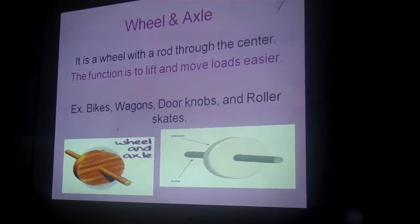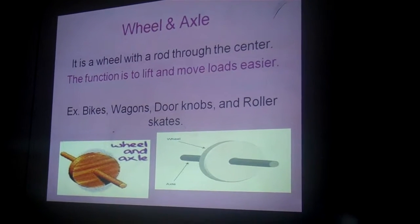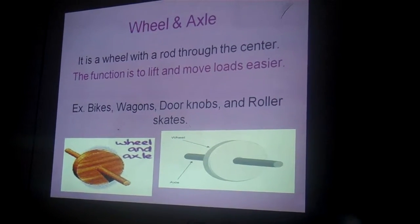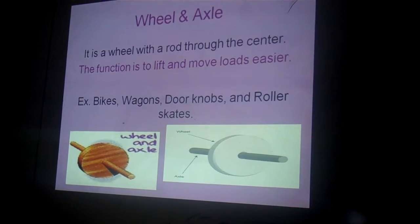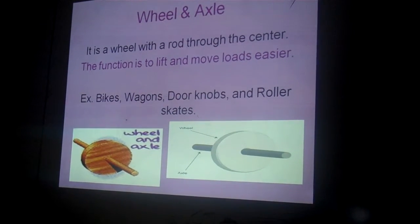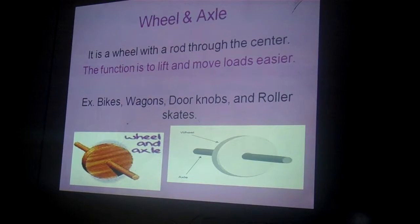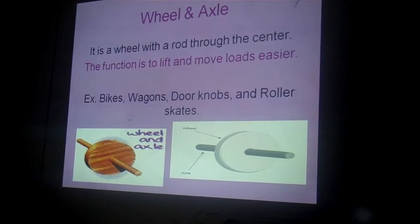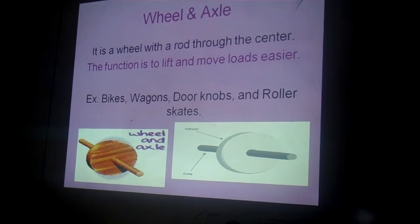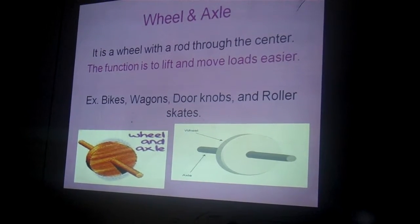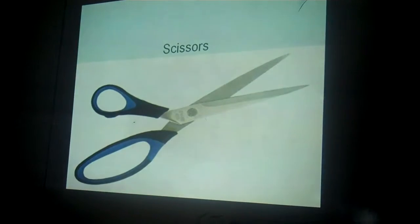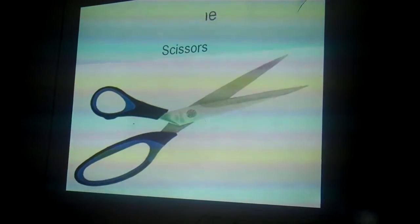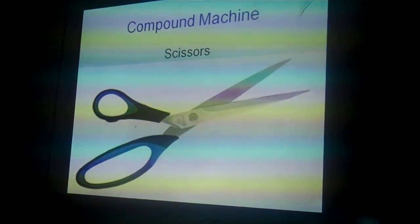A wheel and axle is a wheel with rods through the center. The function is to lift and move loads easier. Examples: bikes, wagons, and roller skates. And my compound machine is scissors.